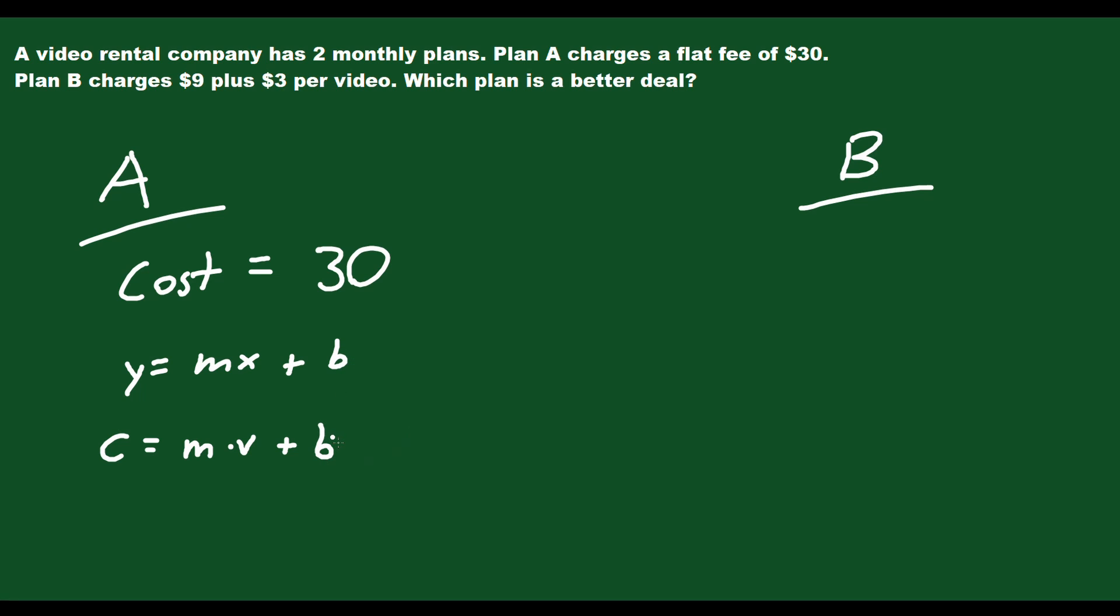Well, what does b represent? Well, b would be the starting cost. B would be your y intercept. It's where the cost begins. So the cost when you rent zero videos, how much are you having to pay? So when v is zero, when you have zero videos, how much is b?